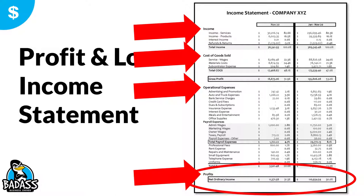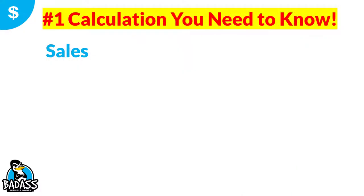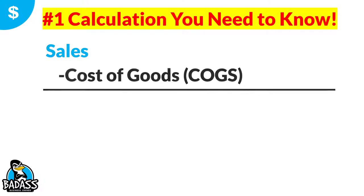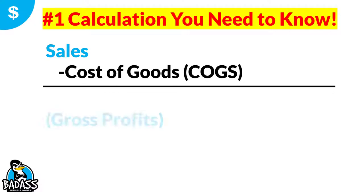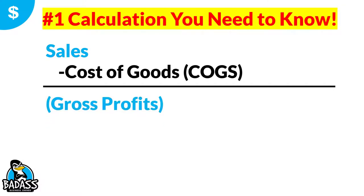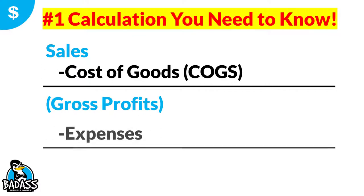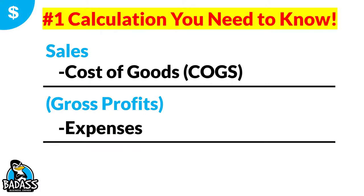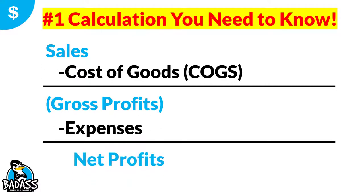When they say gross profit, it's just before your expenses. So let's take a look at this calculation a different way. Sales minus cost of goods is going to give us our gross profits. Then if you take off the expenses, now you're going to get down to the net profit. Sales minus cost of goods gives you gross profits; then after you take off the expenses, you get to your net profits.